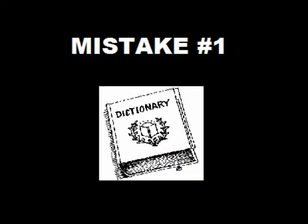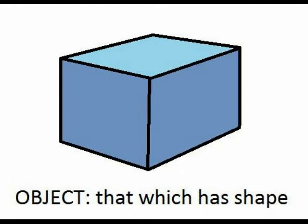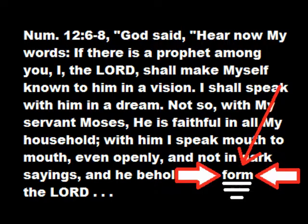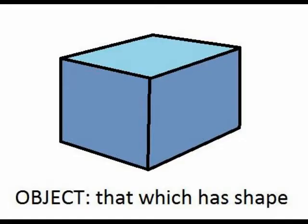The first mistake that most people make when trying to argue against God is asking for a definition of God. This is irrational because God is traditionally assumed to be an object. Numbers chapter 12 verses 6 through 8, along with a few other Bible verses, proves this — it says that Moses speaks directly, mouth to mouth, with God, and that he has a form to behold. So we must keep in mind that it is irrational to define a specific object. Objects can only be objectively modeled or represented, never defined.